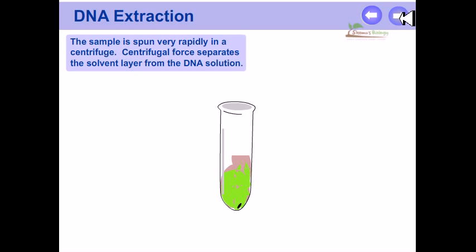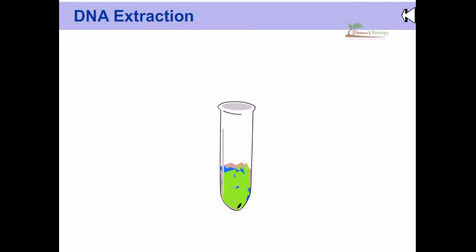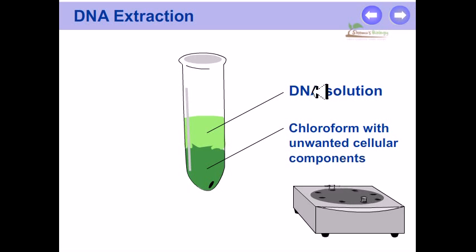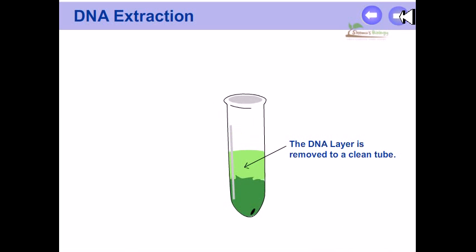The sample is spun very rapidly in a centrifuge. Centrifugal force separates the solvent layer from the DNA solution. The DNA solution is separated from the chloroform with unwanted cellular components, and the DNA layer is removed to a clean tube.